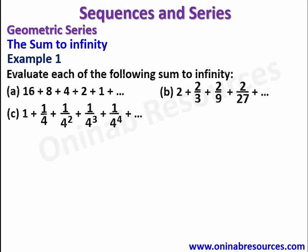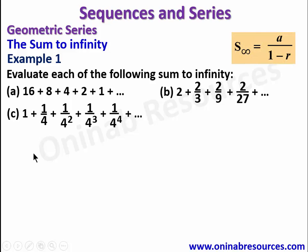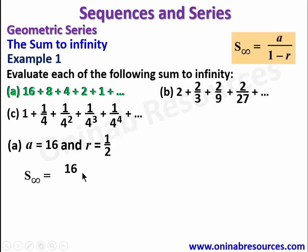We now go ahead to solve some examples on the sum to infinity of geometric series. Example 1a: evaluate the sum to infinity. Our first term a is 16 and the common ratio r is 1/2. So the sum to infinity will be 16 over (1 - 1/2), which gives 16 divided by 1/2, which is 16 times 2, giving us 32. That is the sum to infinity of this geometric series.